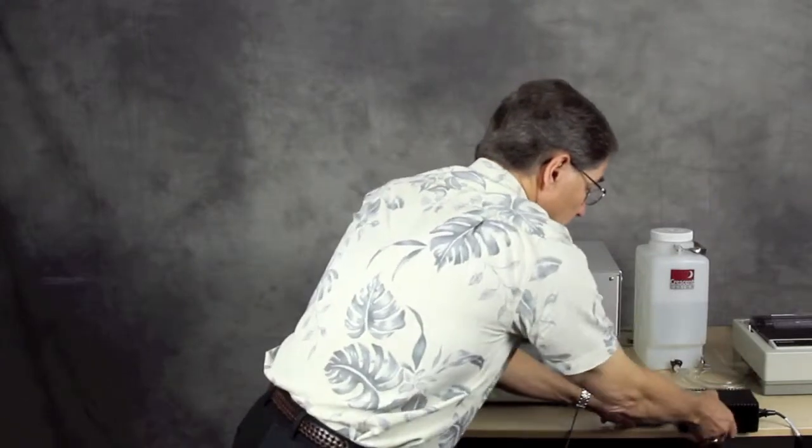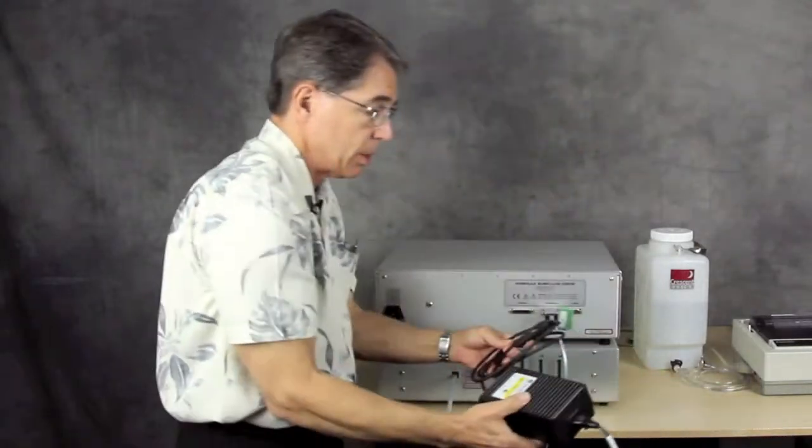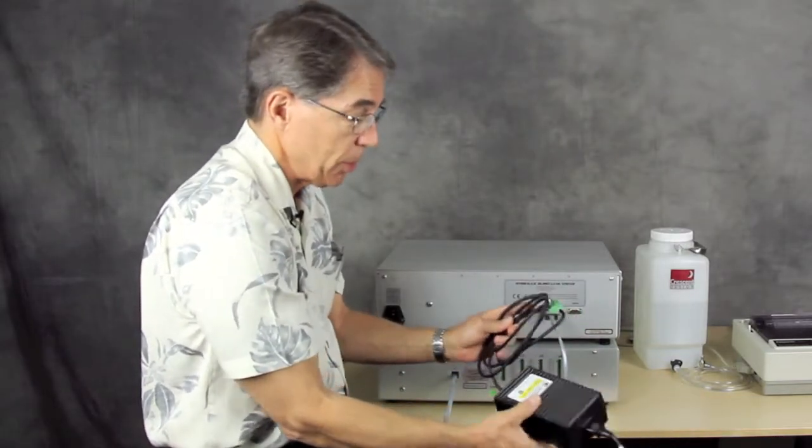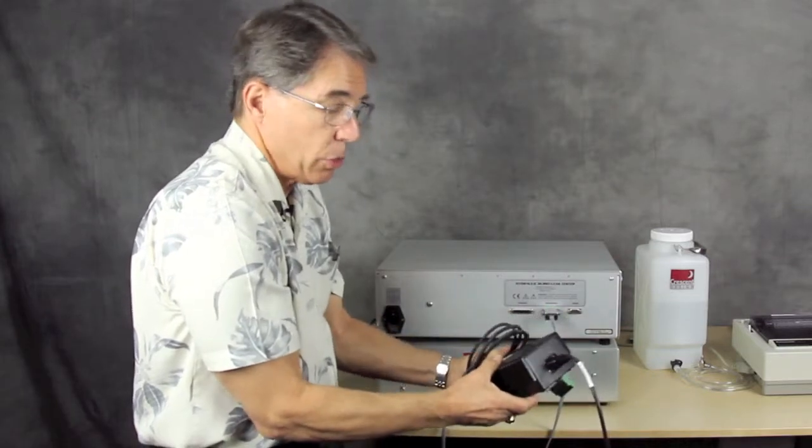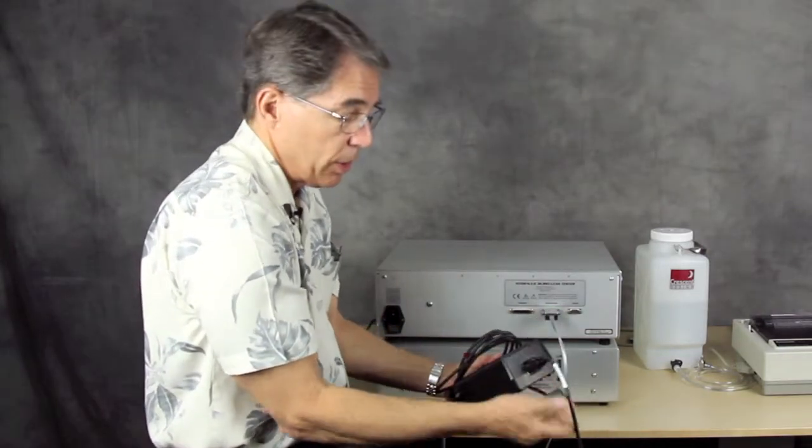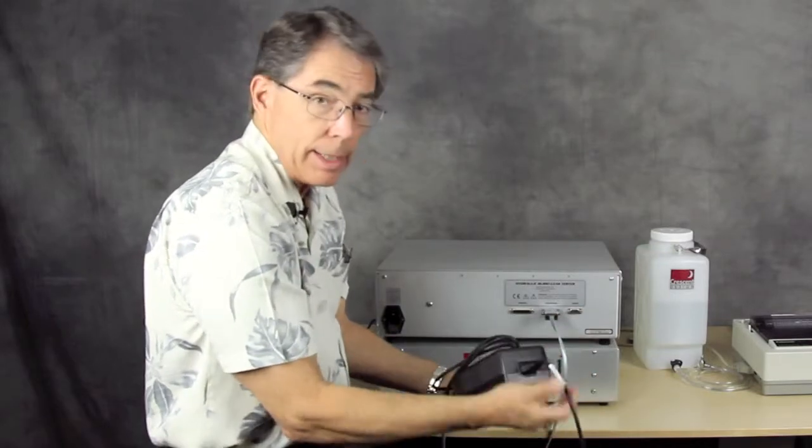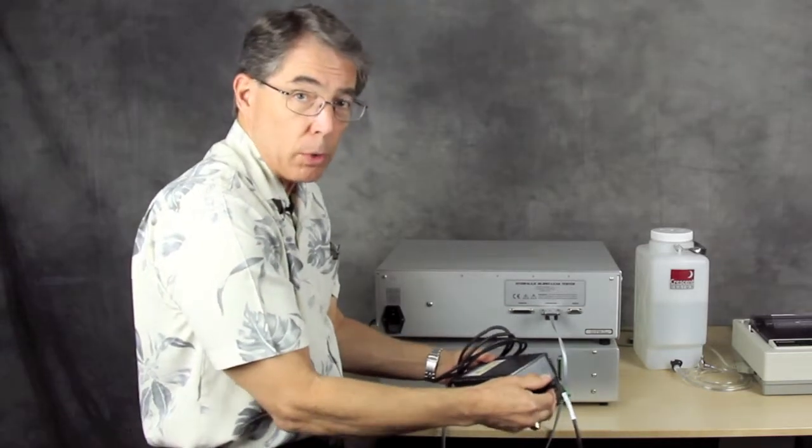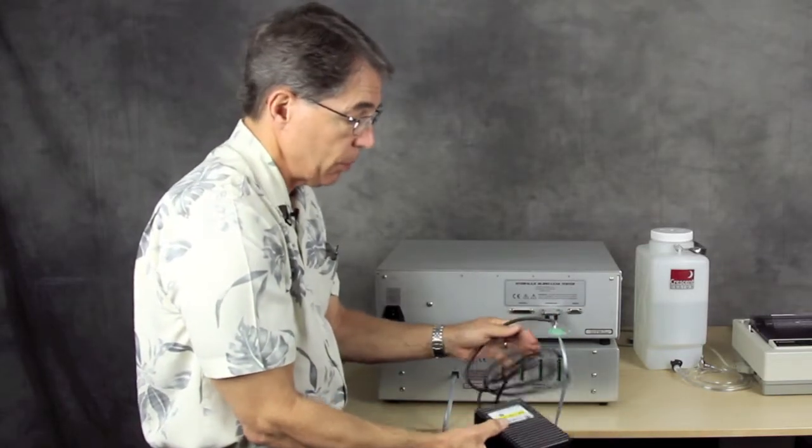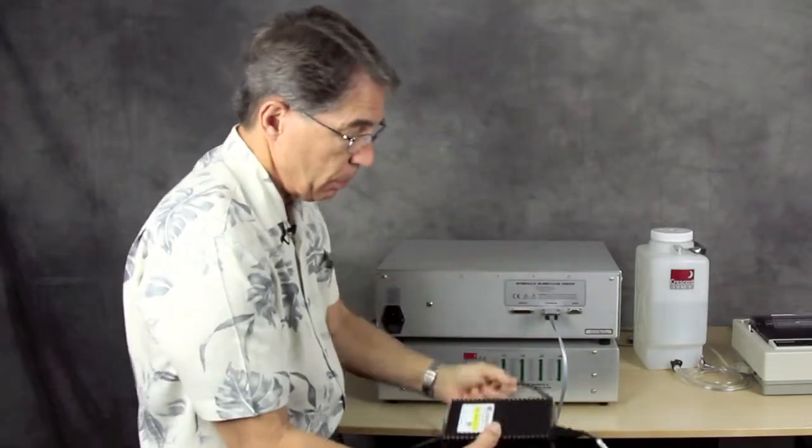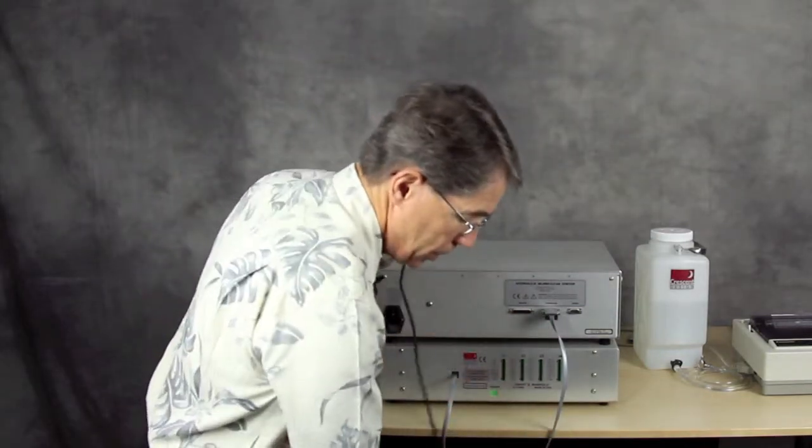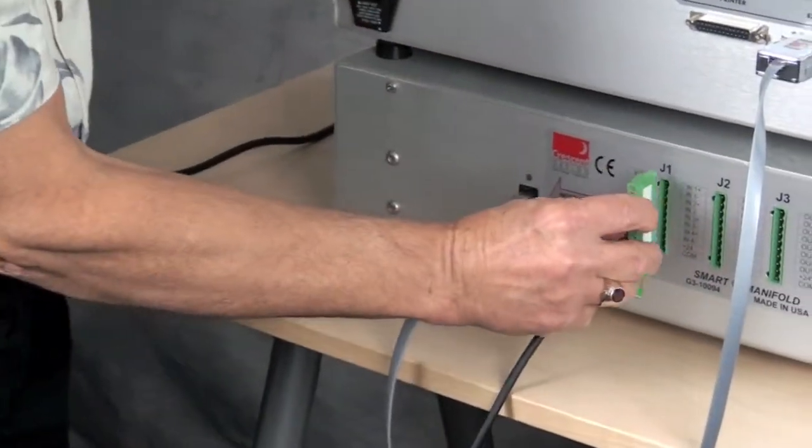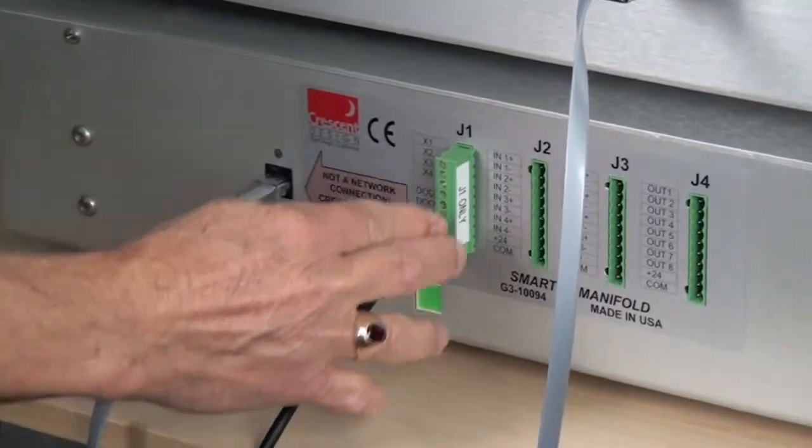Also, we have the power supply. This is the smart manifold power supply. Ours happens to be labeled for our demonstration purposes here. But this power supply is universal in that it will work anywhere in the world. And it uses a standard IEC cord, power cord. And we supply the appropriate cord for wherever it happens to be used in the world. And then there is the actual power connection to the smart manifold. And that's J1 only. And we're going to go ahead and plug that in right here.